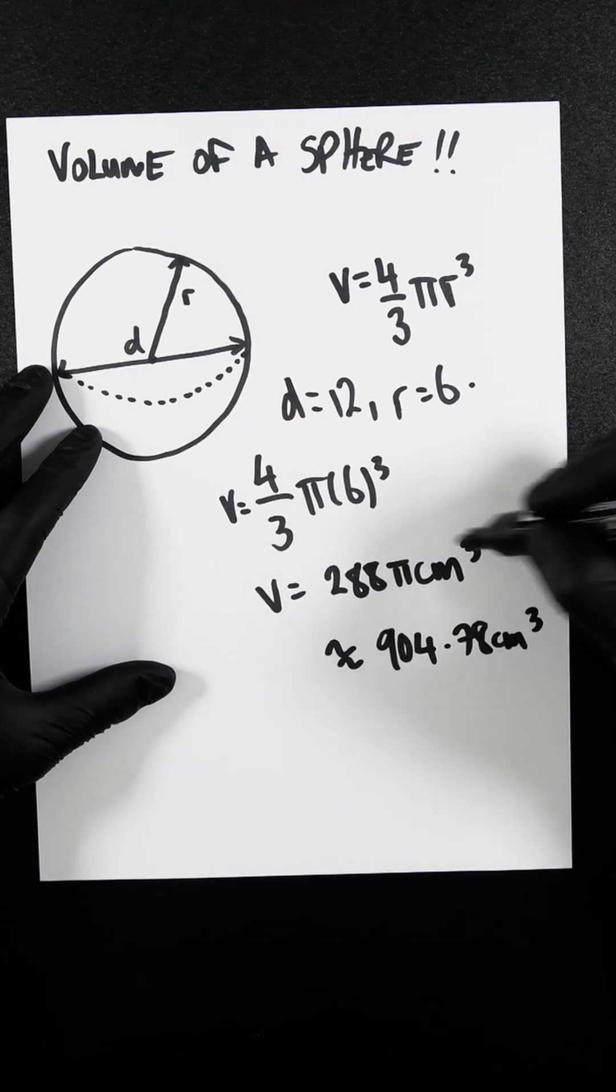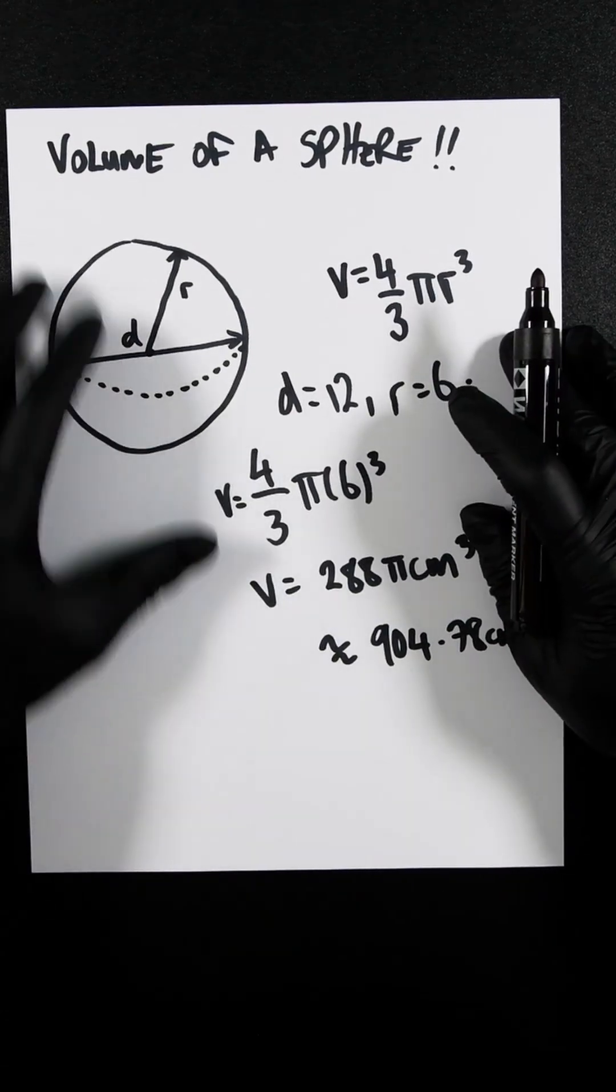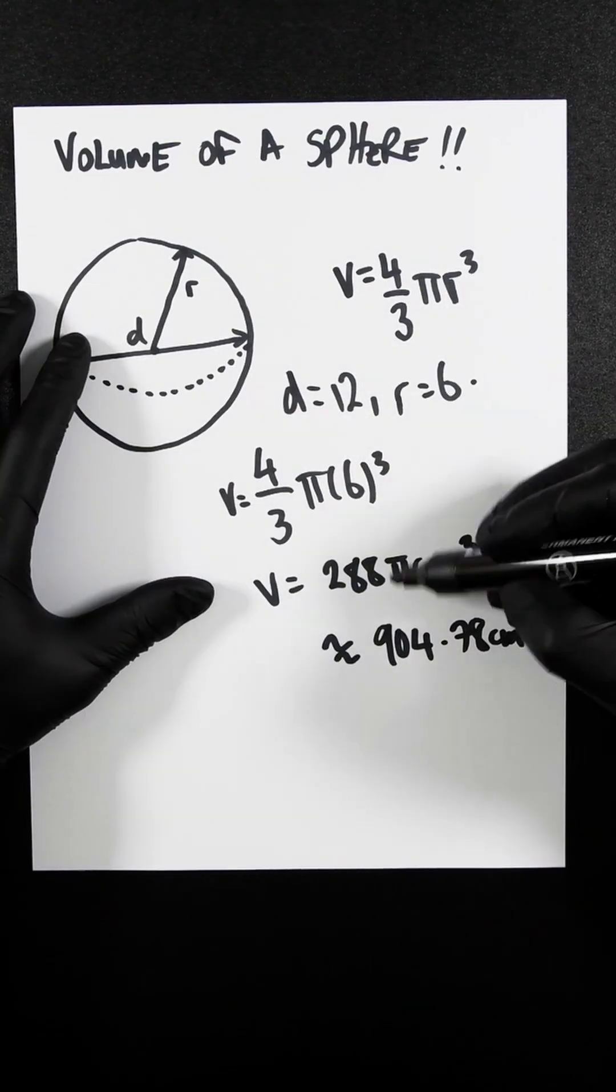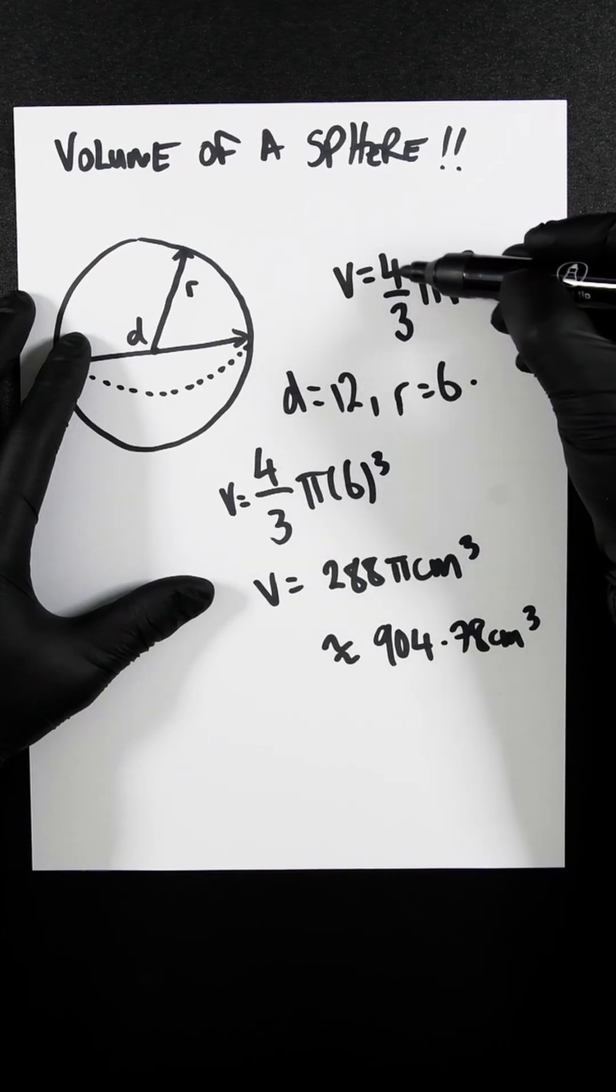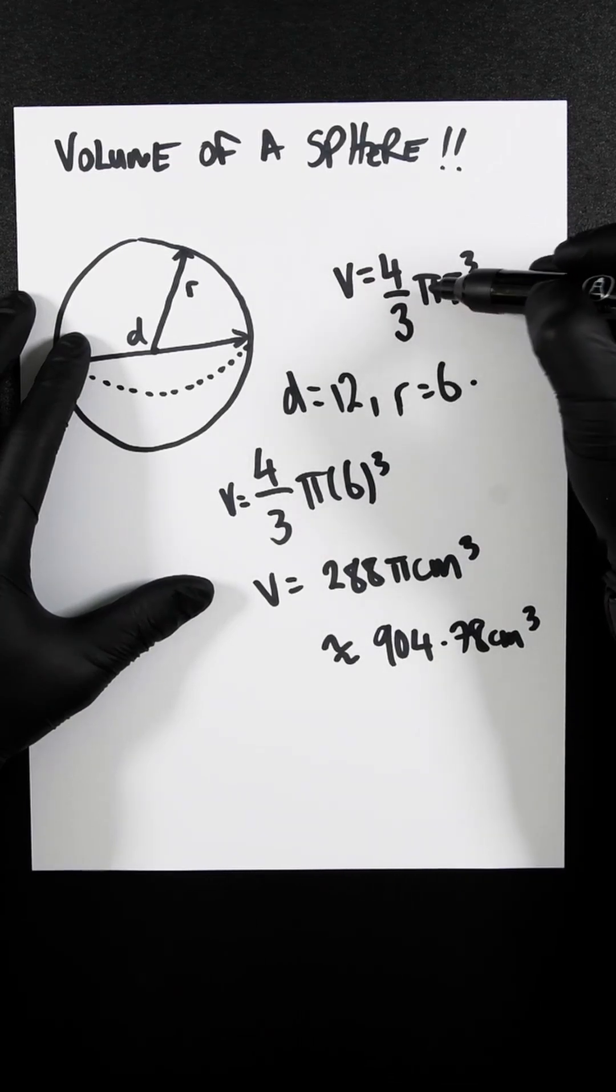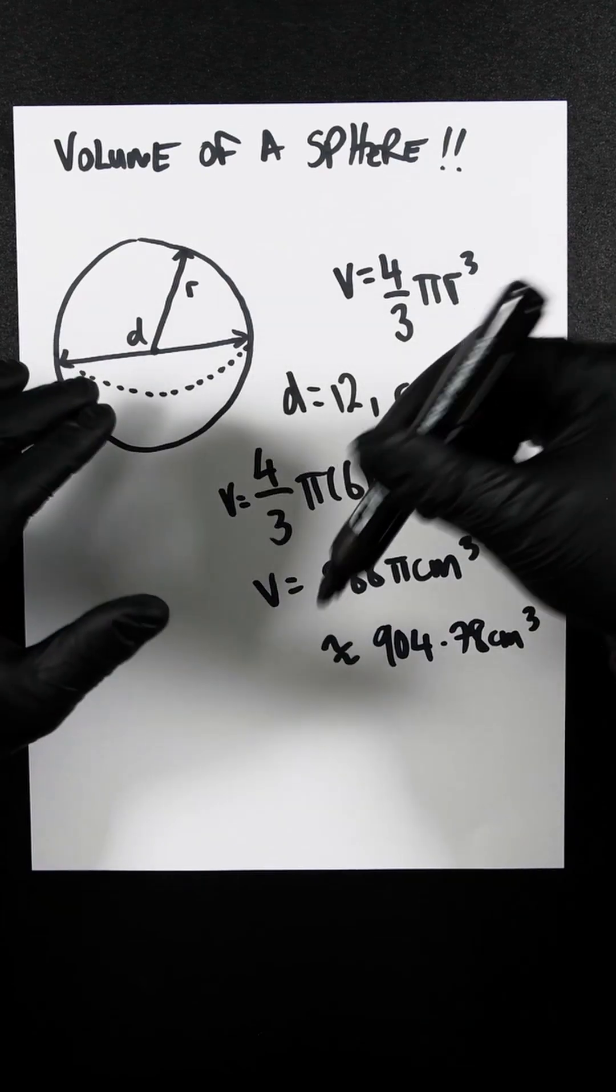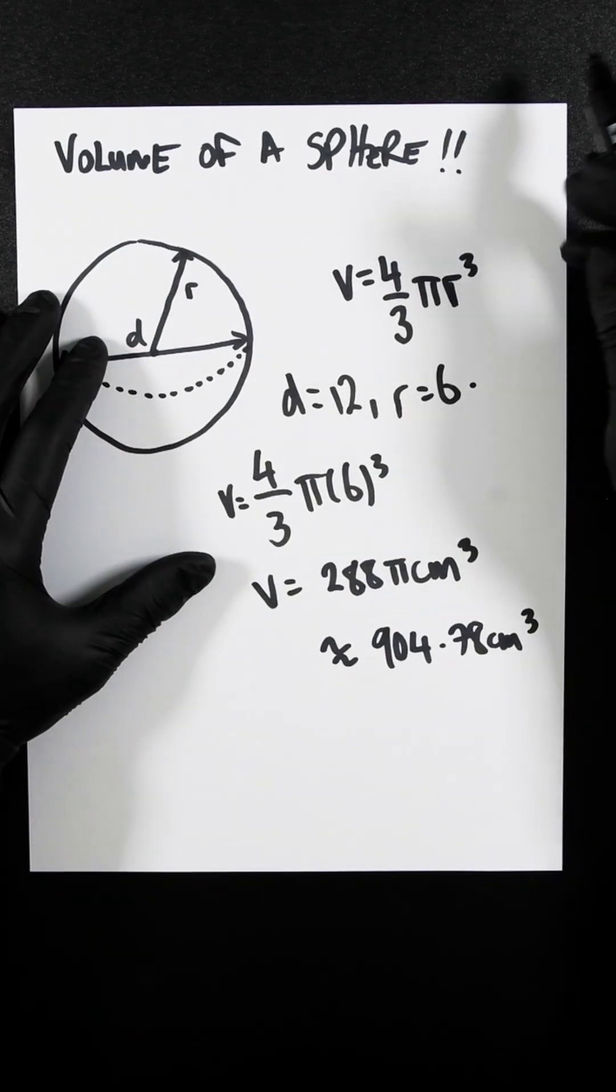If they give you the volume, let's say they give you this, and they want you to find the radius, you put that here. Then you would divide everything by 4/3 and π, and then cube root it to find what the radius is.